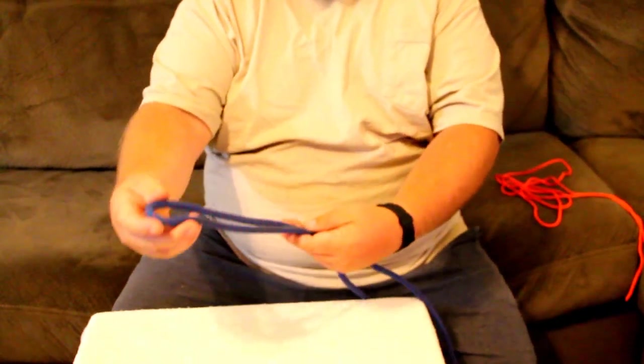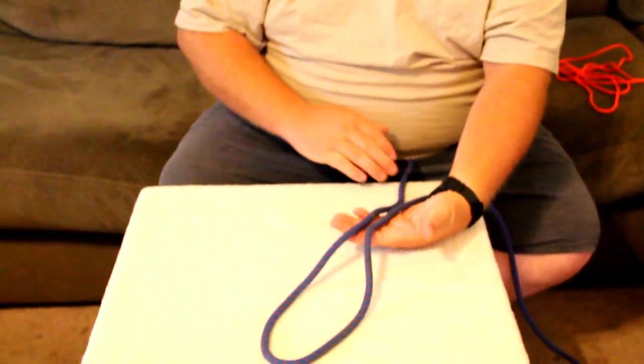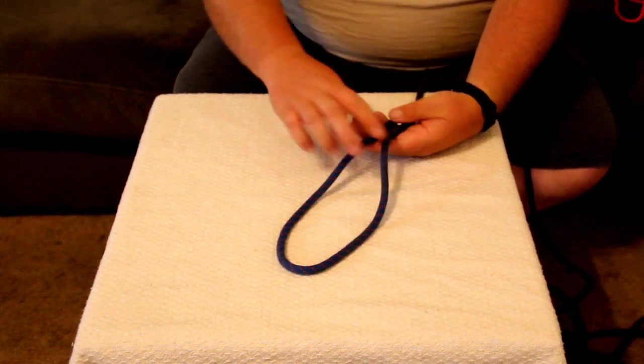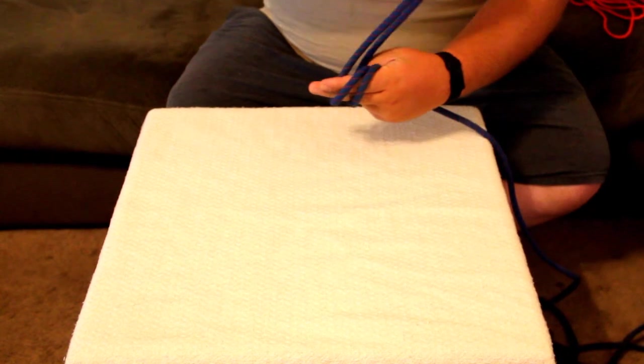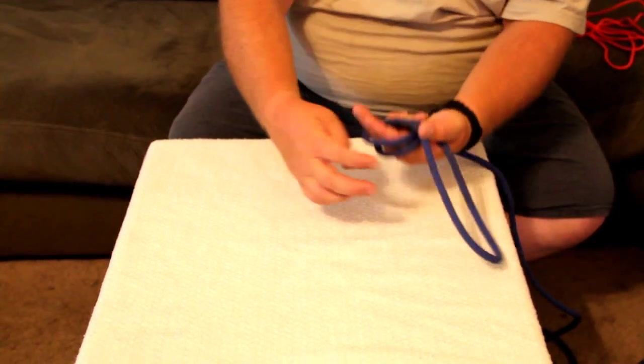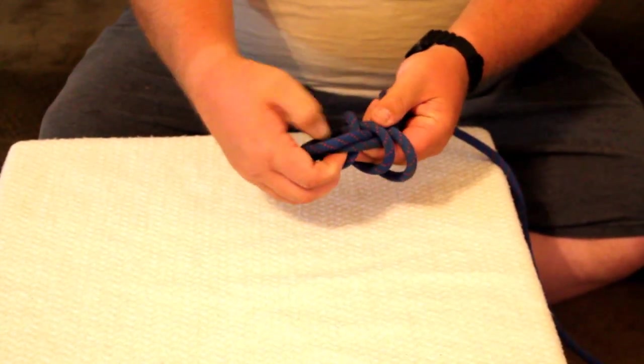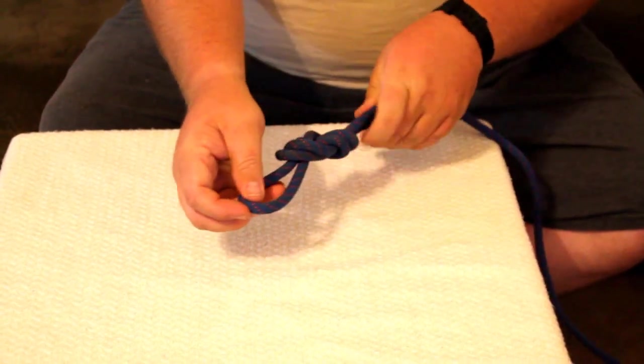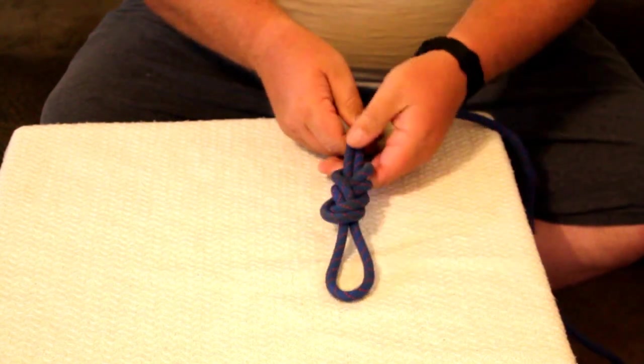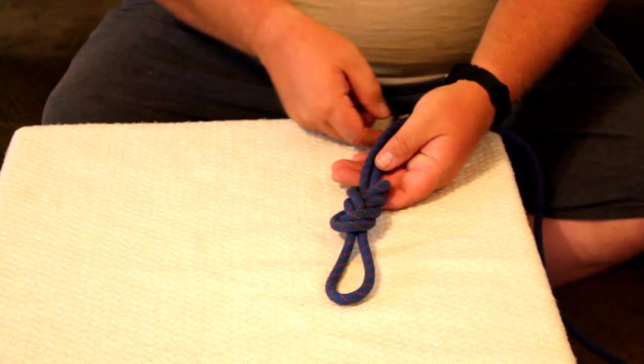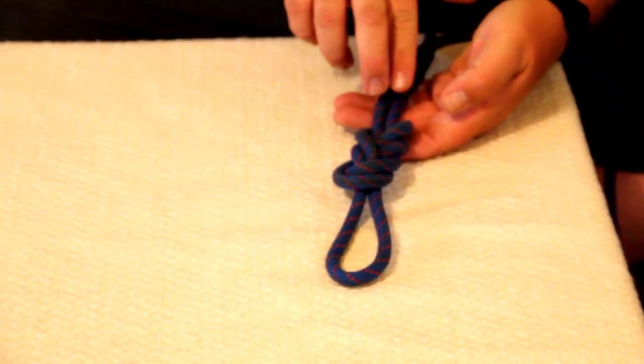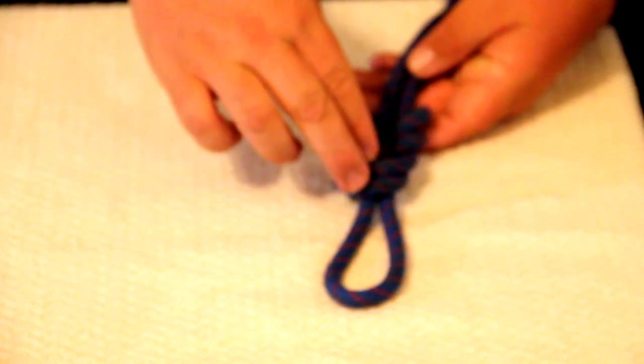The first one is what we call a sport knot or a figure eight on a bite. You're going to take a good bite of rope, meaning it bent over like this. We're going to go over our two fingers like this, so we make a cross over the top, come underneath our two fingers, pull out our fingers and push through the hole. So this is what we're looking for.